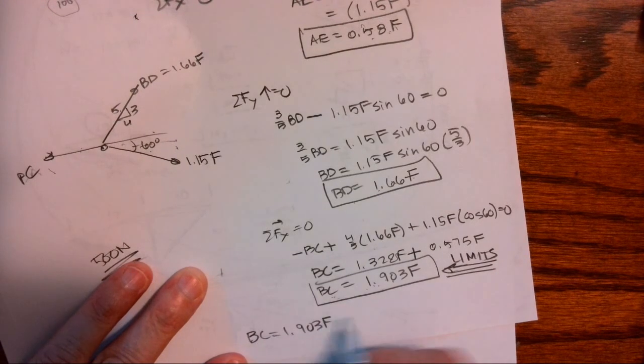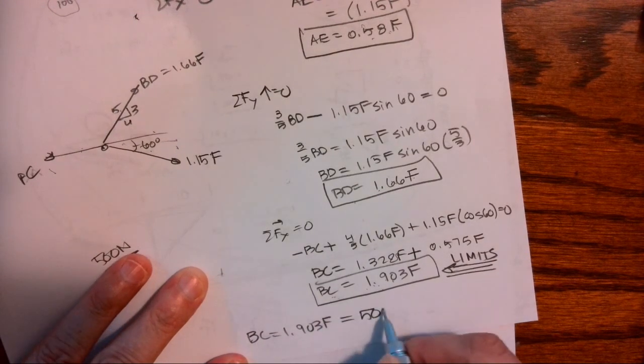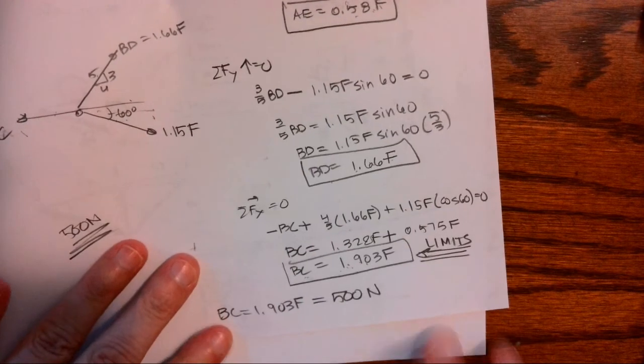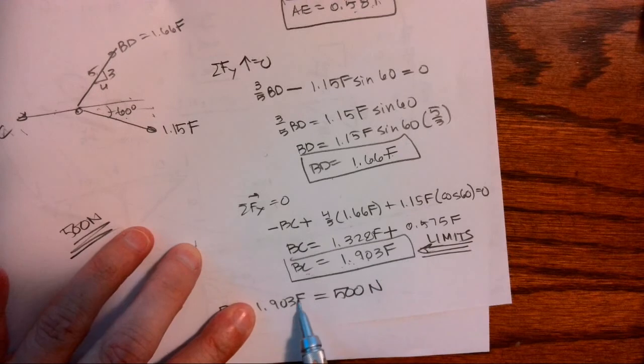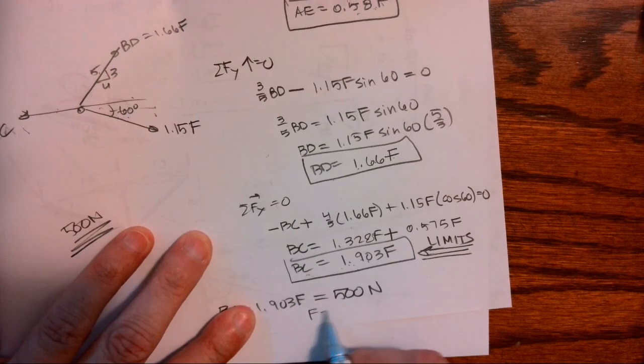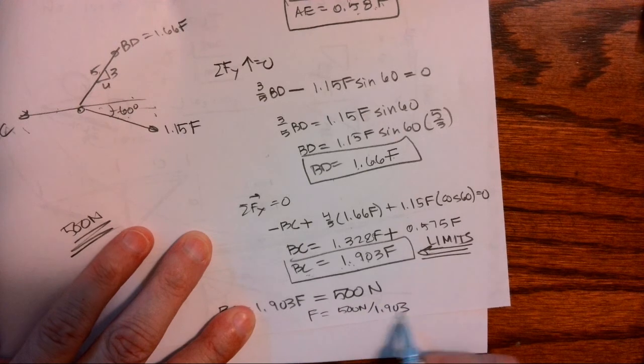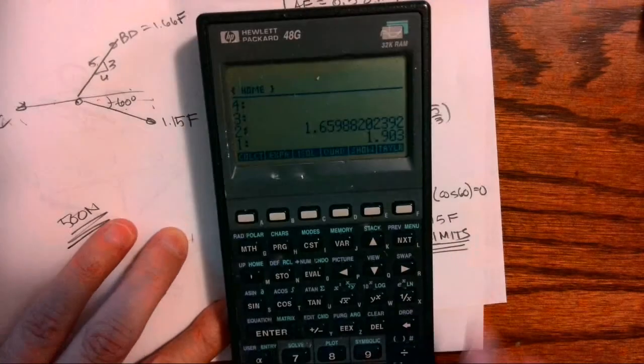So if BC equals 1.903 F and if BC can be no larger than 500 Newtons in terms of the force it can carry, okay, I can now calculate that F is 500 Newtons divided by 1.903. We're going to take the inverse times 500.